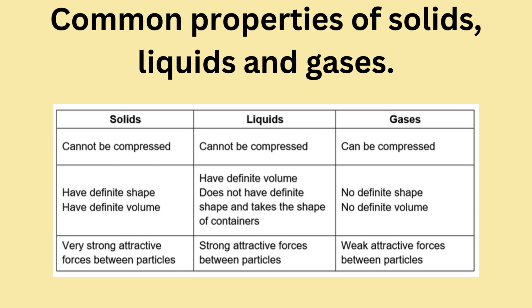Now we compare the properties of solids, liquids, and gases. For solids, they cannot be compressed. They have definite shape and volume, and there are very strong attractive forces between particles. For liquids, they also cannot be compressed. They have a definite volume but no definite shape; liquids take the shape of the container they are in, and there are strong attractive forces between particles. For gases, they can be compressed, have no definite shape and no definite volume, and the attractive forces between the particles are weak.